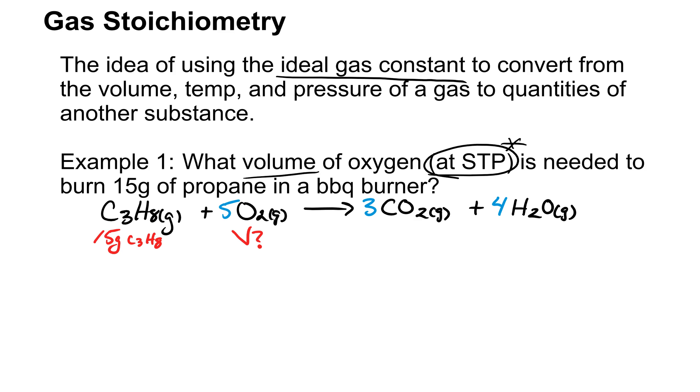So when we do stoichiometry, we always relate the number of moles of one substance to another. We're going to need the moles of propane to get the moles of oxygen. How do we turn mass into moles? The way we turn mass into moles is with the molar mass. So the molar mass of propane is 44.11 grams of C3H8 per one mole of C3H8. If I want to relate these two things together, I'm probably going to have to flip one of them.